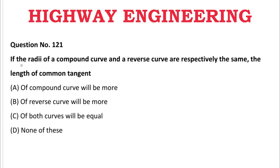Next question: If the radii of a compound curve and a reverse curve are respectively the same, the length of the common tangent — A: of compound curve will be more, B: of reverse curve will be more, C: of both curves are equal, D: none of the above. The correct answer is C, both curves are equal.